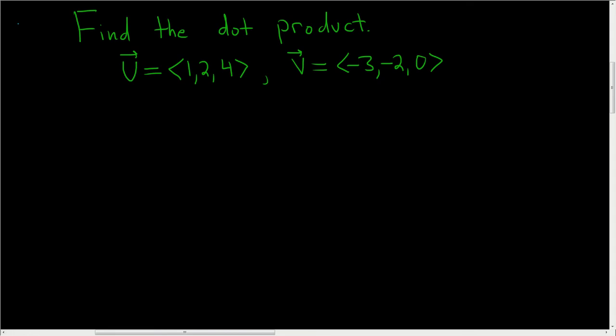We're being asked to find the dot product of these two vectors. Let's go ahead and work it out. So u dot v.